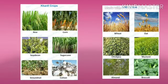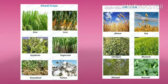Examples of Rabi crops are wheat, oats, mustard, almond, broccoli, etc.